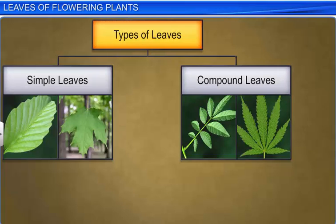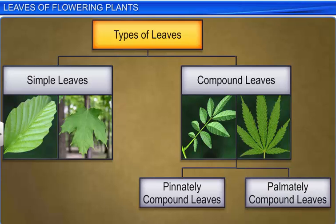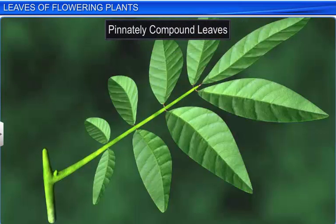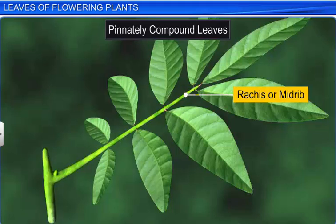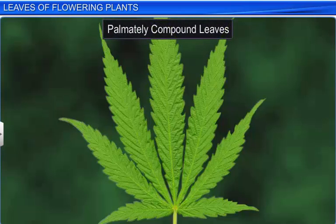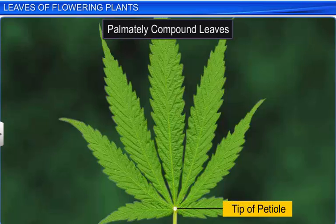Compound leaves are further classified into pinnately and palmately compound leaves. In pinnately compound leaves, there are several leaflets on the common axis, or the rachis, which is the midrib of the leaf. In palmately compound leaves, all the leaflets are attached to a common point, which is the tip of the petiole.